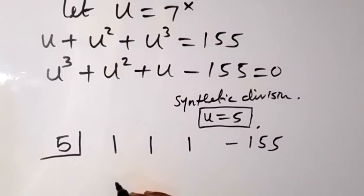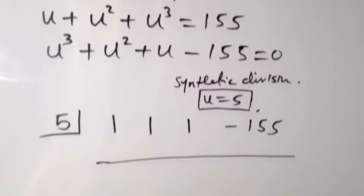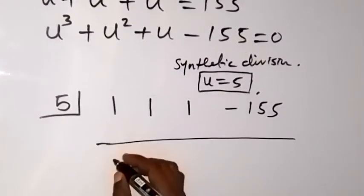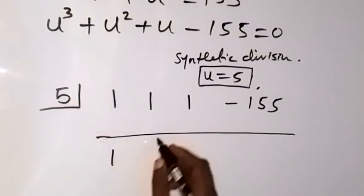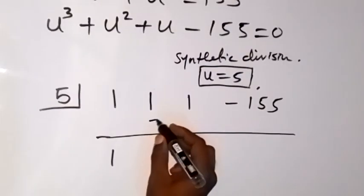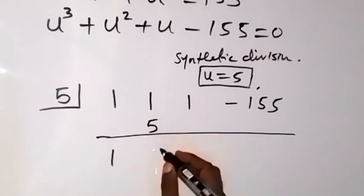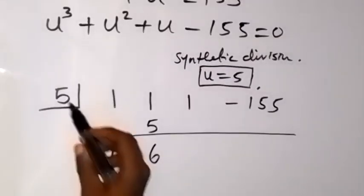We bring the first number down, which is 1. Then 5 times 1, that's 5, we write it here. One plus 5 is 6. Then 5 times 6, that's 30.